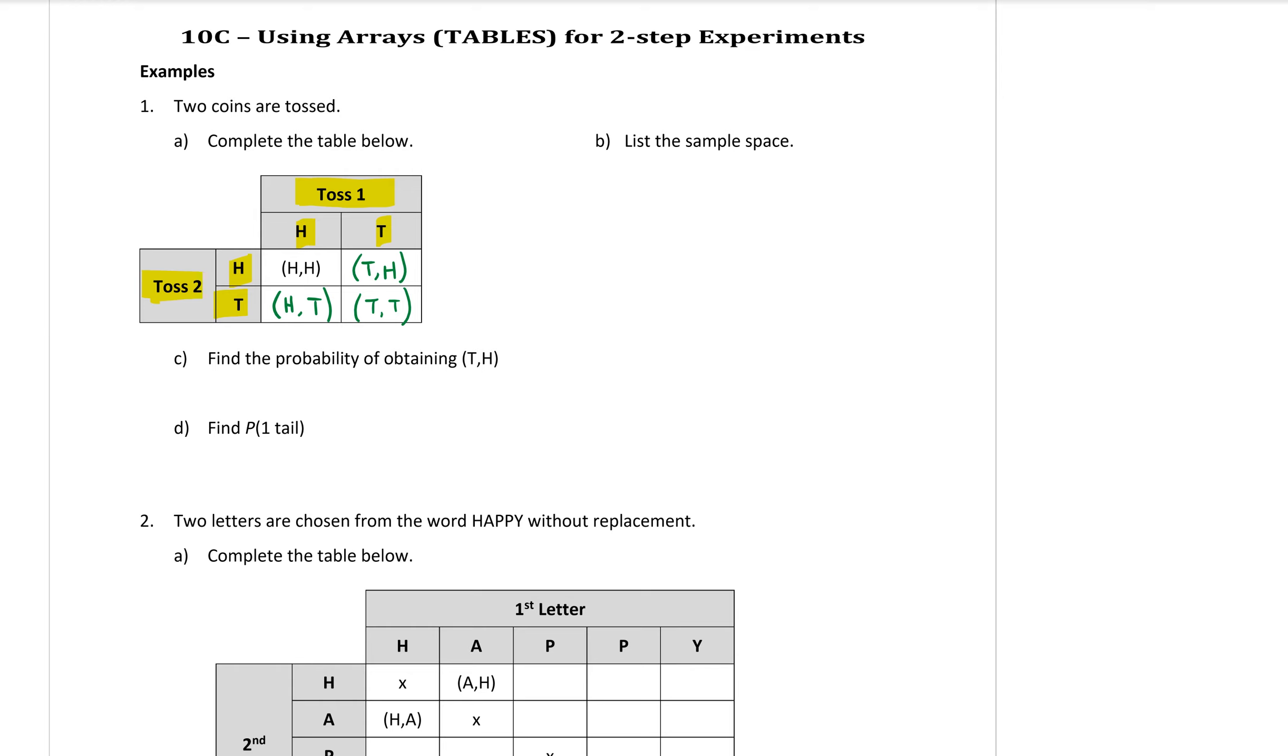Okay, so part b of this question wants me to list the sample space. Now the sample space is just listing off all the different possibilities of when I flick the coin twice. So we do a capital S for sample space equals, and we open those big curly brackets. Now we want to list off all the outcomes, which are all these things in the white boxes of my table. So the first one I had was head head, then I'm going to put a comma. The next one I had was head tail. The next one was tail head, and the next one was tail tail. It doesn't matter if you write those in a different order as long as you have the four different possibilities listed in that sample space there.